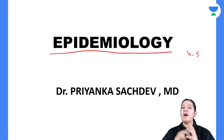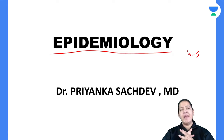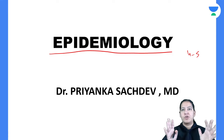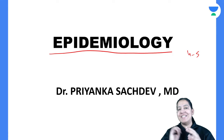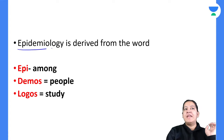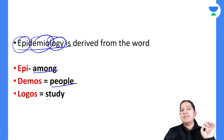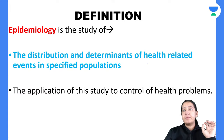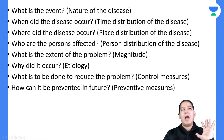Today we are having a two-hour session of epidemiology. This topic is really very important, and there are many numericals based on it. Today I will teach you measurements of mortality and morbidity. Before that, you should understand what is epidemiology. Breaking down the term: 'epi' means among, 'demos' means people, and 'logi' means study. So epidemiology is the study of distribution and determinants of health-related events in a specific population.